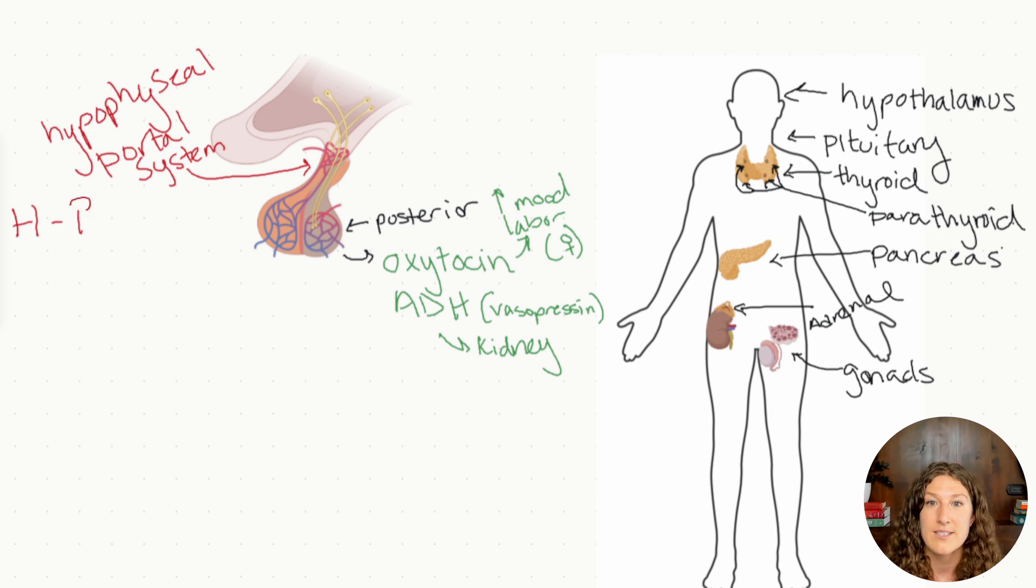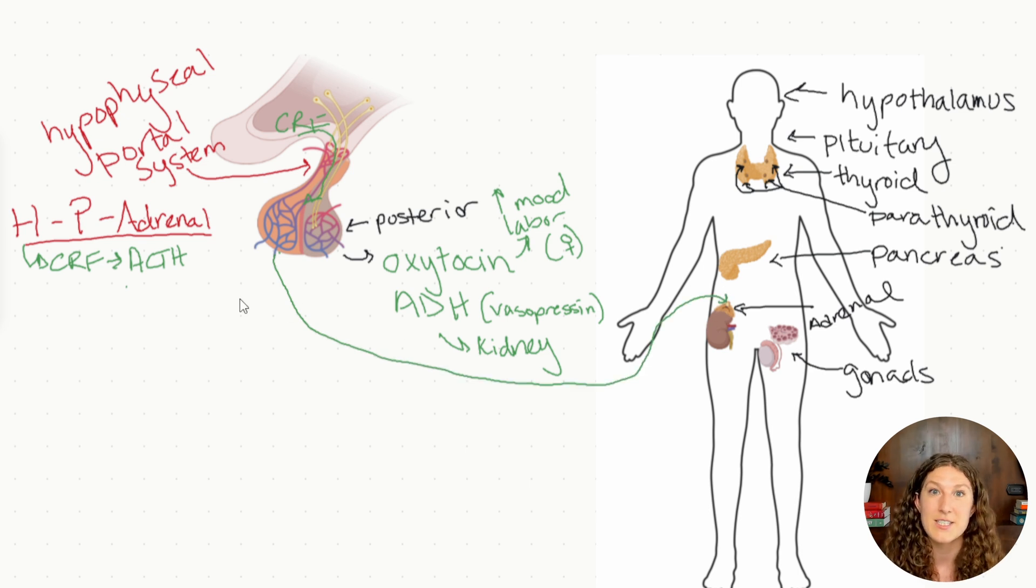We're going to start with the HPA axes, which is the hypothalamus pituitary adrenal axis. All right, so the HPA axis, we're going to start at the hypothalamus. The hypothalamus produces a hormone called CRF, corticotropin releasing factor. That CRF, which is produced in the hypothalamus, then travels down the hypophyseal portal system and binds to receptors in the anterior pituitary. ACTH is then released from the anterior pituitary into the systemic circulation, where it travels all the way down to the adrenal glands, specifically the adrenal cortex. It will then stimulate the adrenal cortex to make corticosteroids. And our most common corticosteroid is cortisol. Cortisol is our stress hormone that helps us respond to stressors in our body and in our environment.